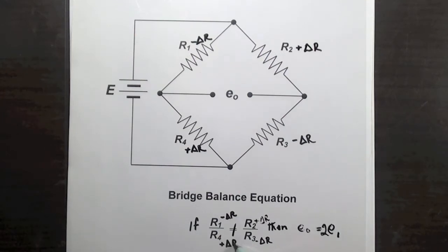Since all the arms of the Wheatstone bridge are changing resistances, we call this a full bridge configuration.